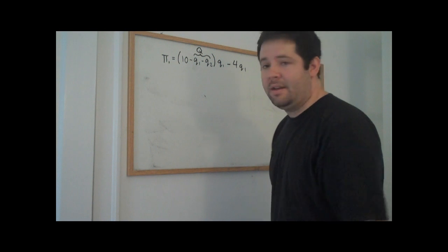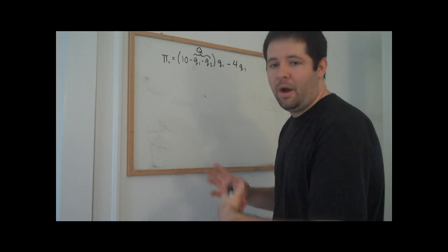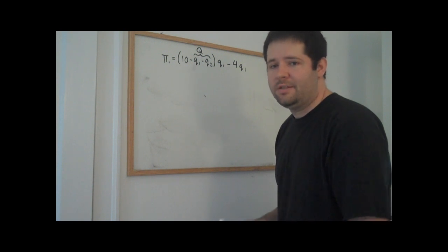We know from very basic calculus that if we take the derivative with respect to quantity that firm 1 can pick, set that equal to zero, then what we will get is their profit maximizing quantity. Let's go ahead and do that.